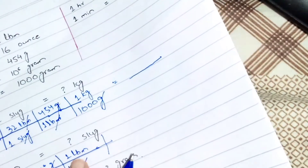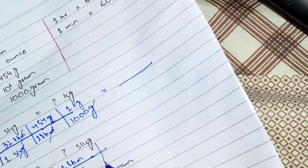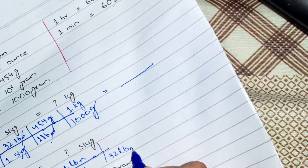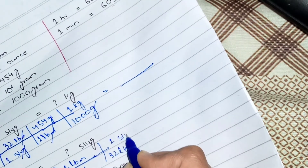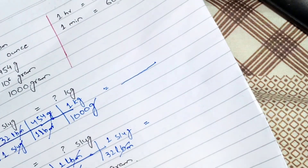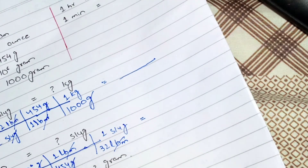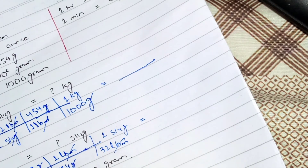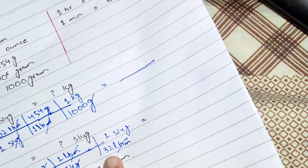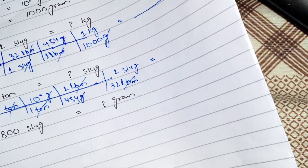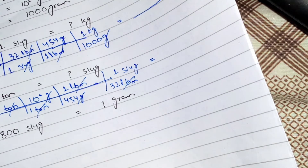Now I know 1 slug equals 32 lbm, so I place 32 lbm in the denominator and 1 slug in the numerator — lbm cancels lbm. The final calculation is: 10 × 10 to the power 6 × 1 divided by 454 × 32. And now we have our last question of mass conversion: how many grams will be there in 800 slug?